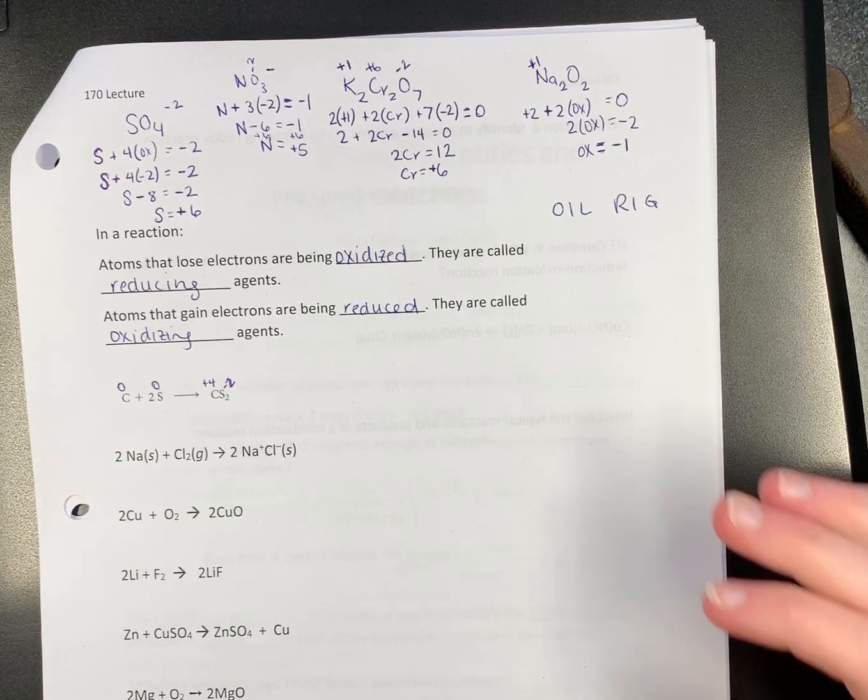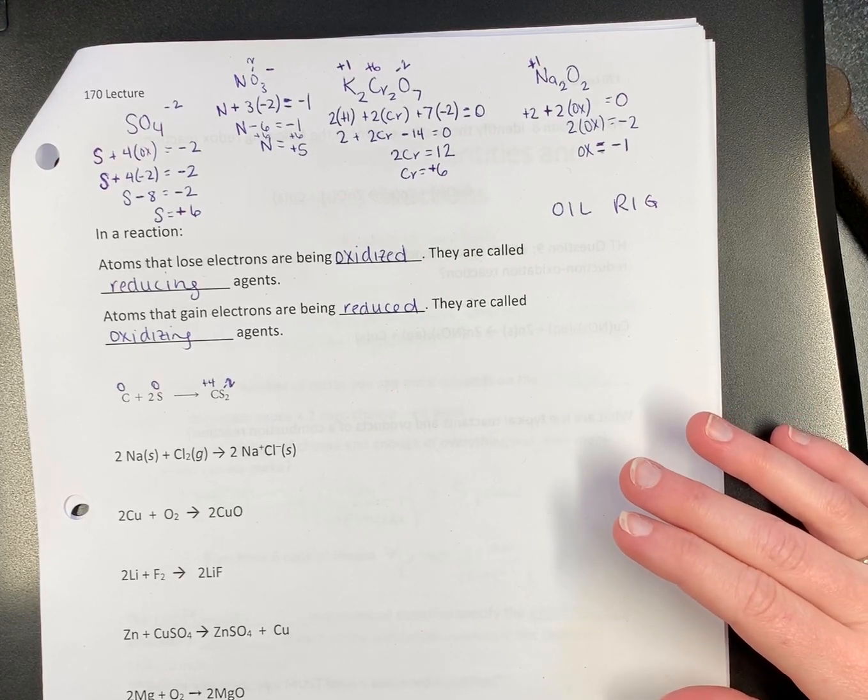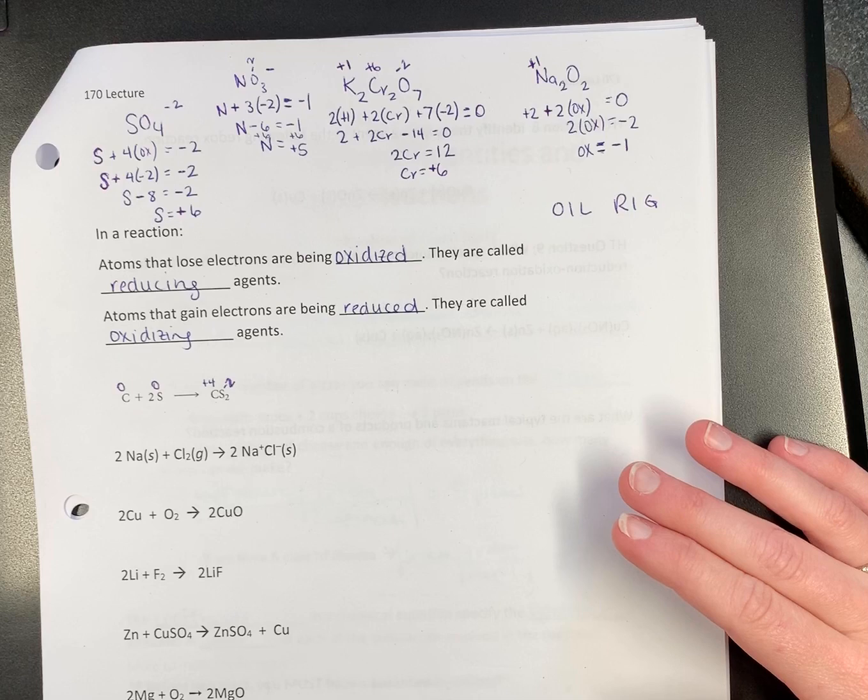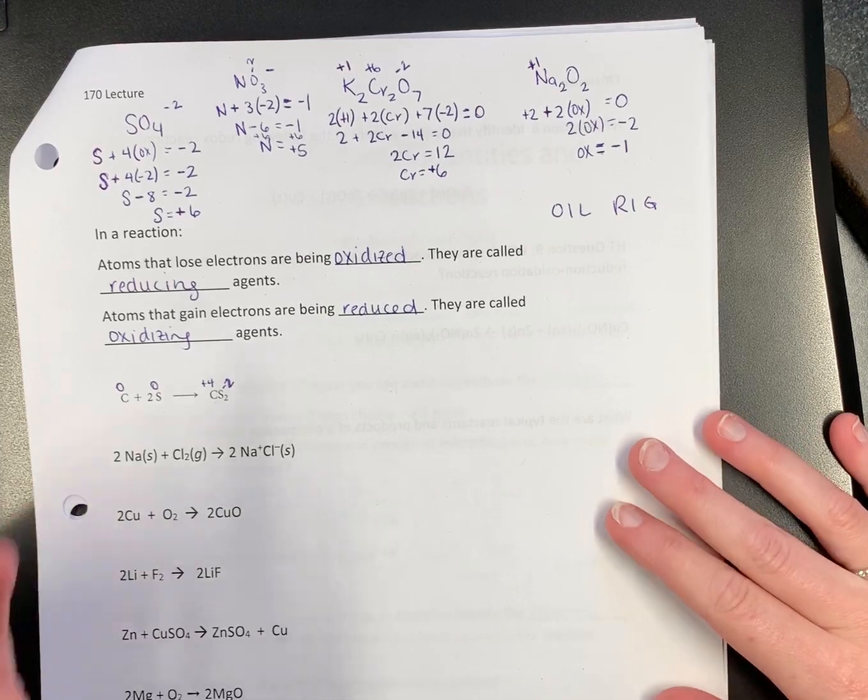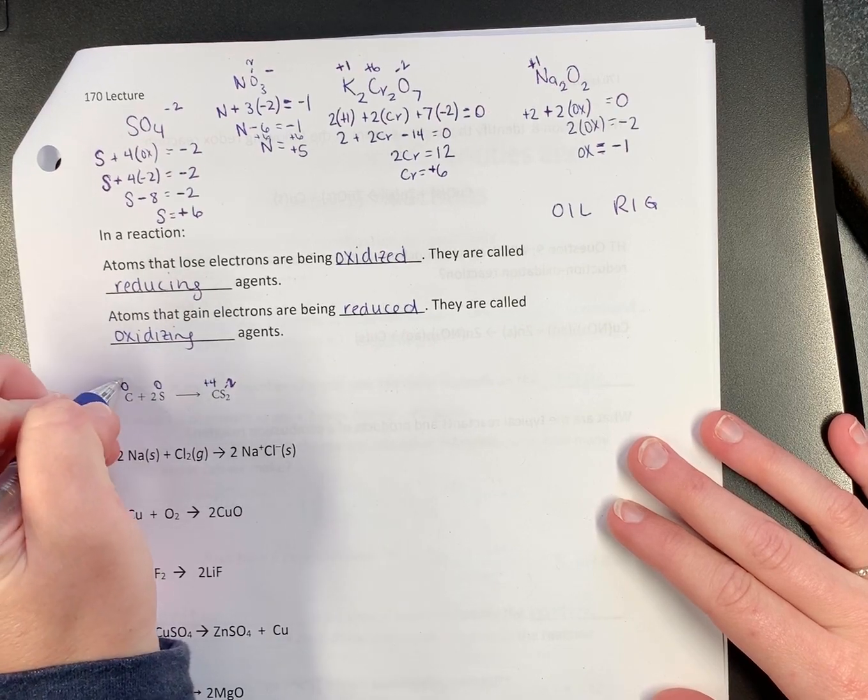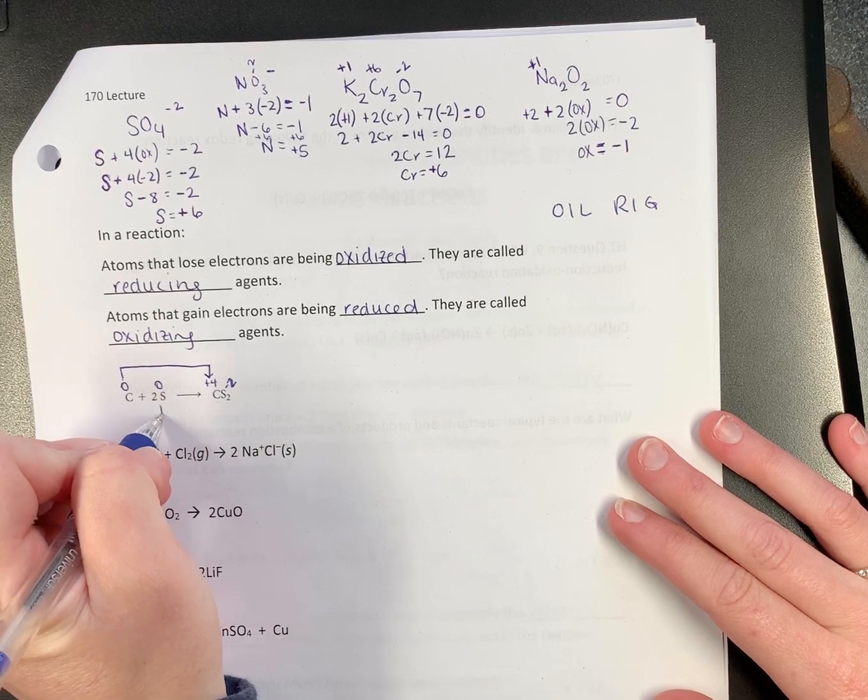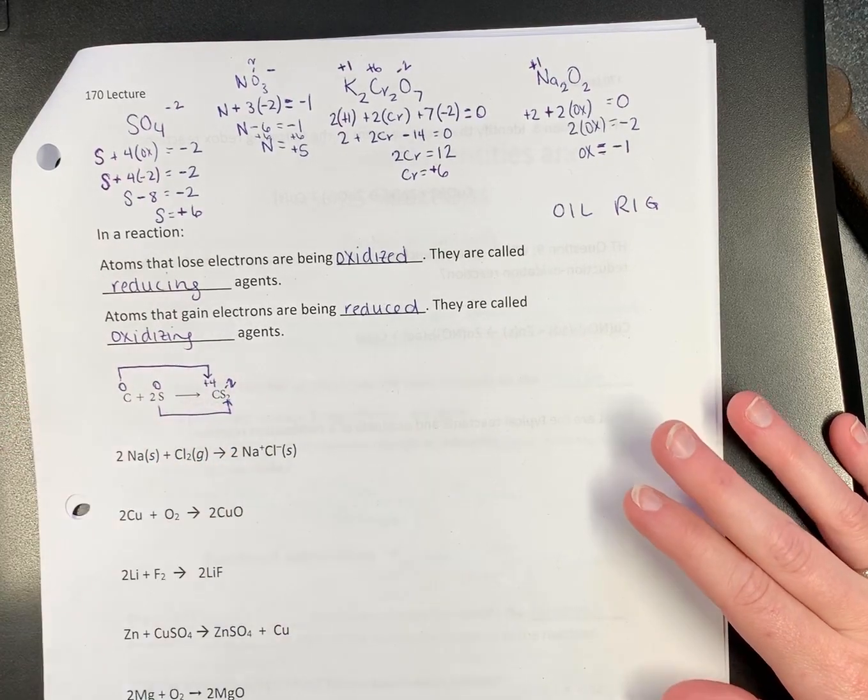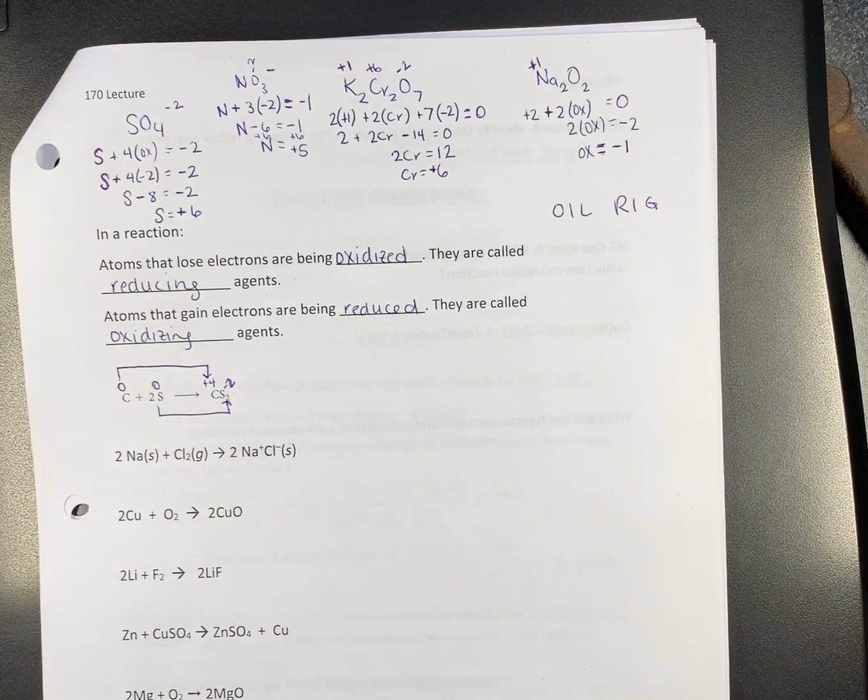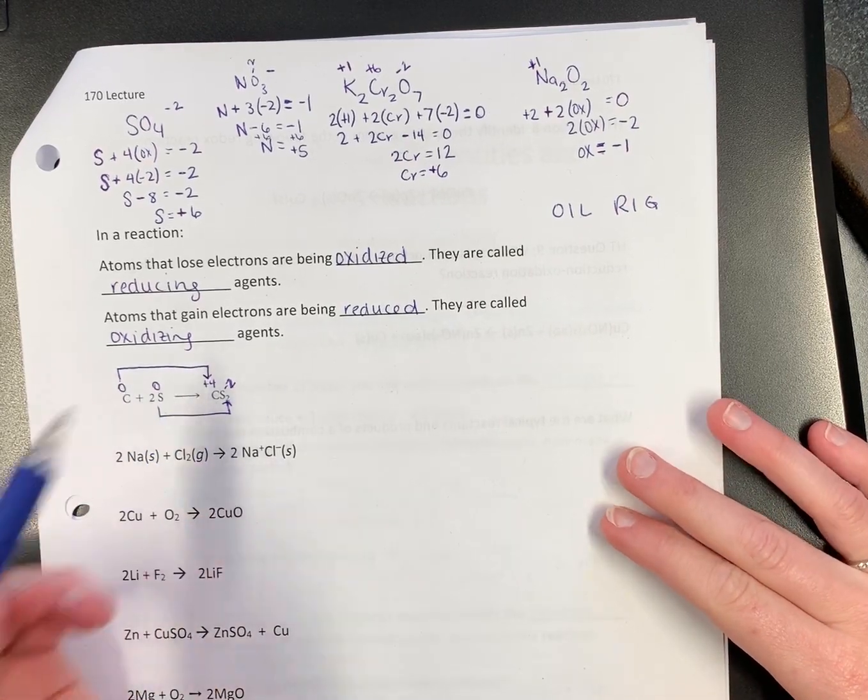Now, the next thing you do. Draw arrows. And these are square arrows. Draw from the numbers that change.